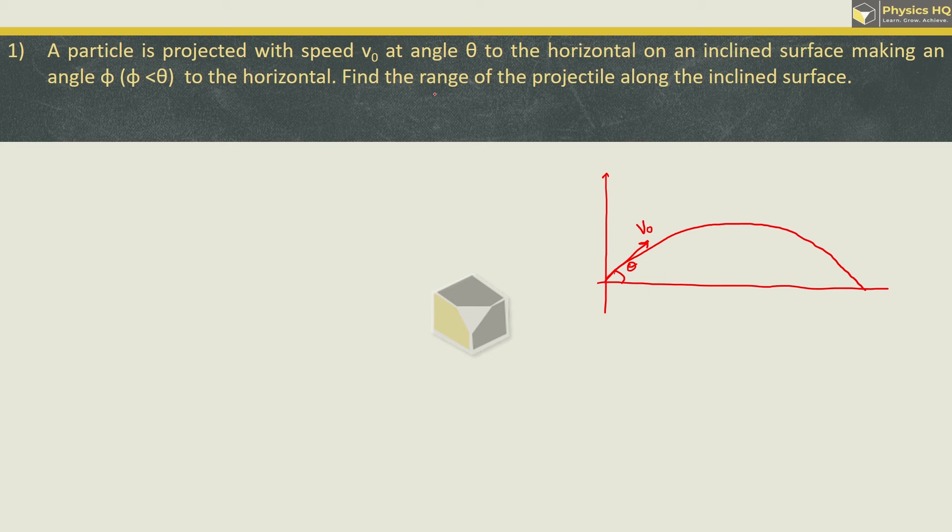But they want that this particle will cover the distance along an inclined surface which is making an angle of phi with the horizontal. So we will make a surface here. Let us say this is the surface which is making an angle of phi with the horizontal. Now because of this inclined surface, this particle will travel this way.